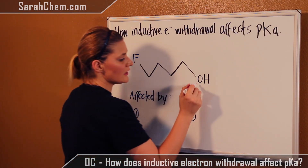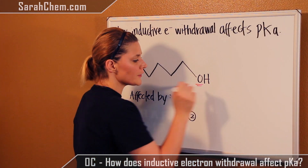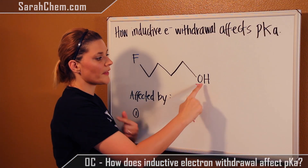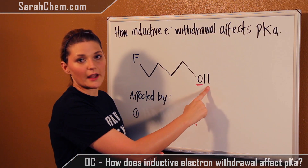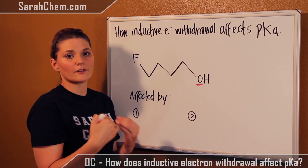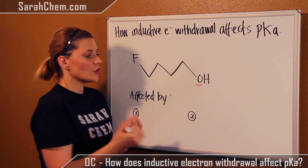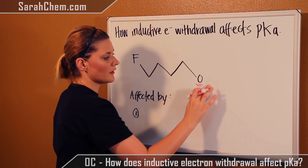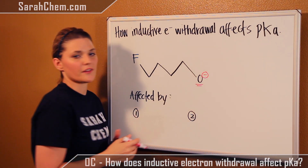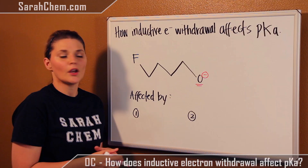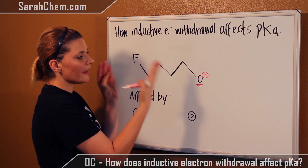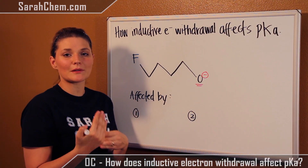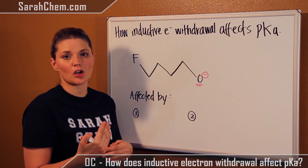So if we first look at this compound here, oxygen is the one we're going to pay attention to first because oxygen is the one that's going to lose the hydrogen and thereby gain a negative charge. So let's remove this hydrogen and add a negative charge to that O. We need to see if there is anything else in this compound that could potentially stabilize that negative charge.